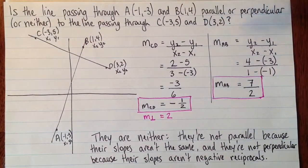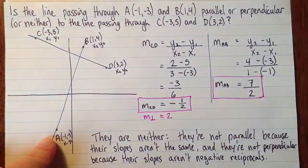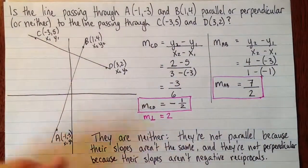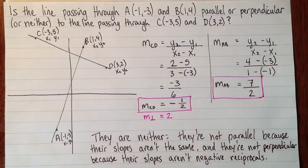Okay, so just to review, if you want to decide if lines are parallel or perpendicular, or neither. First draw a sketch, to get some idea of what's reasonable. Because it's way too easy to make a calculation mistake. And then calculate the slope of one of the lines. Calculate the slope of the other line. And you can just compare them. If they're the same, the lines are parallel. If they're negative reciprocals from each other, then the lines are perpendicular. Alright, thanks.